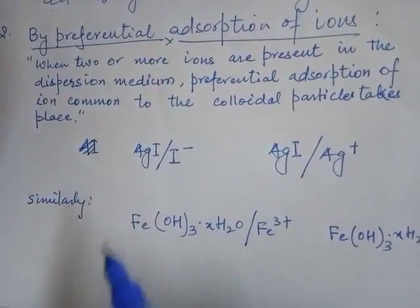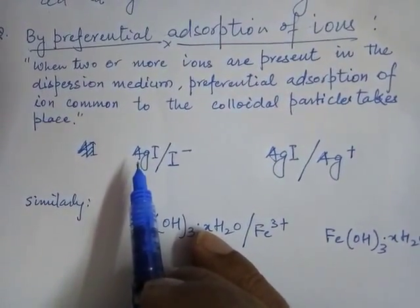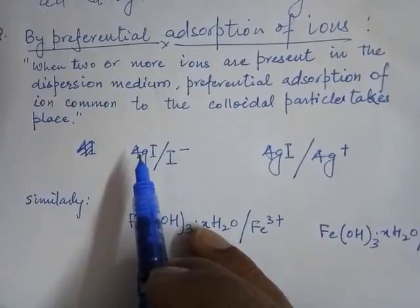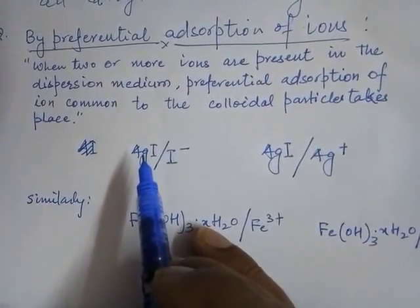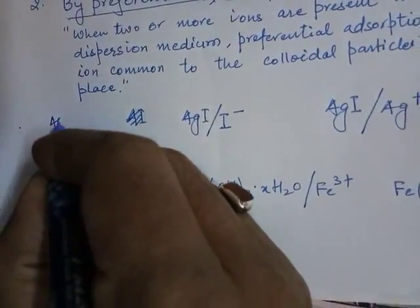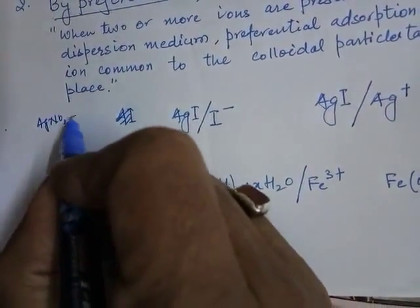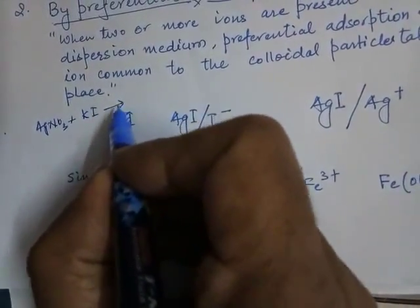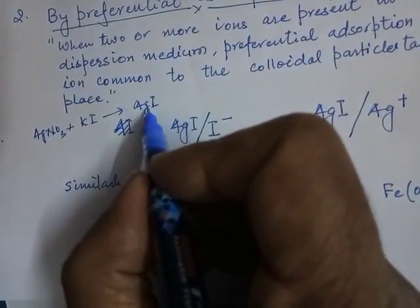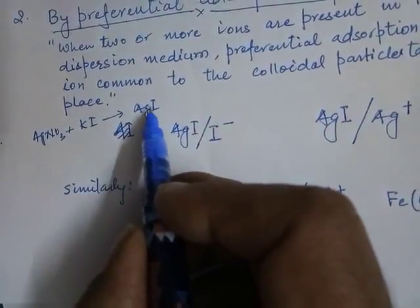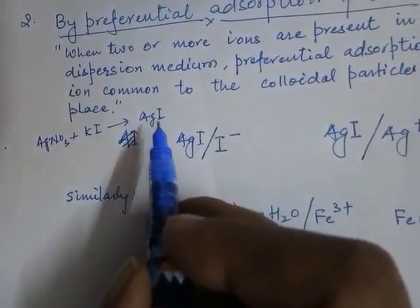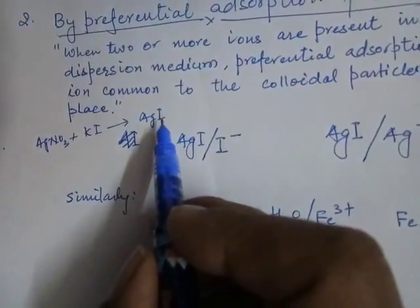For example, when preparing silver iodide sol — as covered in previous videos — silver iodide sol is prepared by mixing silver nitrate (AgNO₃) with potassium iodide (KI). Silver iodide molecules are formed and aggregate into larger particles of colloidal size. The ions present in the solution at this point are Ag⁺, K⁺, I⁻, and NO₃⁻.